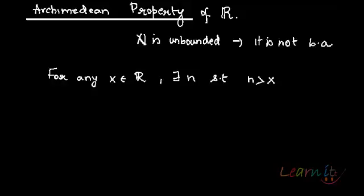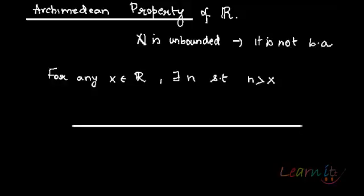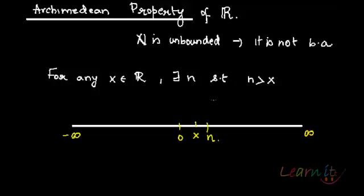So essentially, what does that mean? If you have a number x on the real line — from negative infinity to infinity — you have x lying somewhere here. Then there will be a natural number ahead of this real number. For example, take 4.33 — that is a real number. After this real number there will be a natural number, 5. That is what this property is saying.